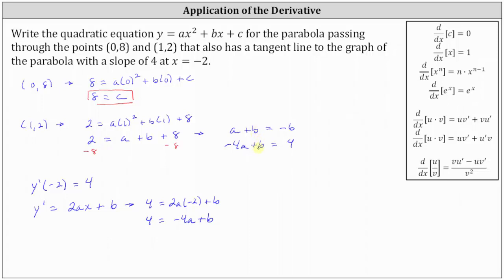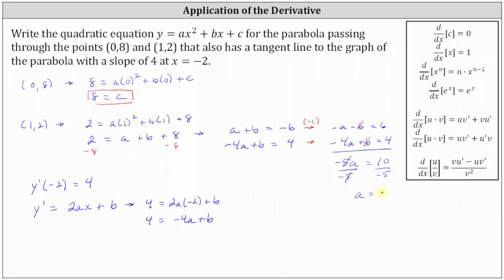Notice how both equations have plus b in them. We make the b terms opposites by multiplying the first equation by negative 1, leaving the second equation the same. The first equation becomes negative a minus b equals positive 6. The b terms are now opposites and sum to 0, and negative a minus 4a gives negative 5a. So negative 5a equals 10, and dividing both sides by negative 5 gives a equals negative 2.